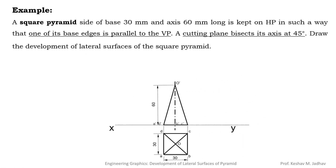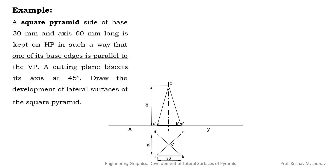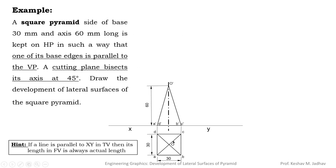An important point to note: if a line is parallel to XY in the top view, then its length in the front view is always the actual length. Here, no slant edges are parallel to XY, so the length of the slant edge in the front view is not the actual or true length. To draw the development, we need the true length of the slant edges. To get the true length, we must make any one of the slant edges in the top view parallel to XY.